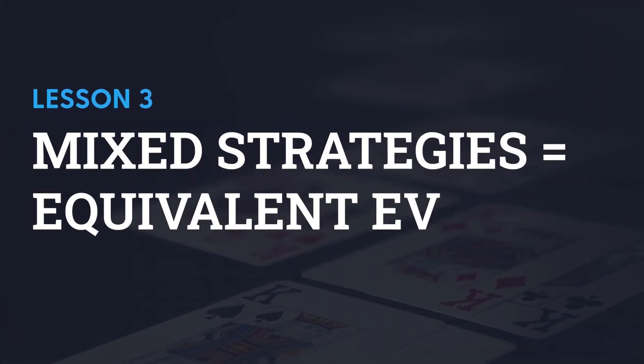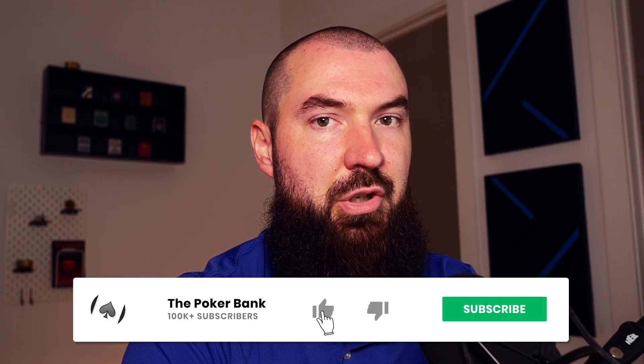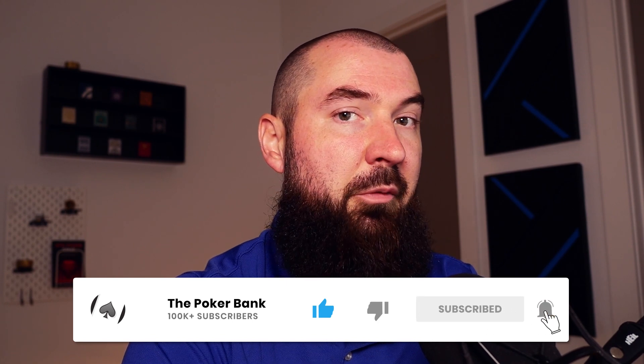Lesson number three is that mixed strategies equal equivalent EV. Mixing is only an option when the EV of two or more lines is completely identical. If a solver is recommending a mixed strategy, it means the EV of the mixed lines must be equal. A common pitfall players have when looking at solver output is they say the solver suggests a mixed strategy, but one frequency is clearly higher than the other, so that higher frequency must be the better line. Even in a situation where the solver suggests checking 56% and betting 44%, you might say clearly we should be checking more since that's a higher frequency — and just put them all into checks. But that's not correct. This same rule applies whether the solver suggests betting 95% and checking 5% — mixed is exactly what it should be.